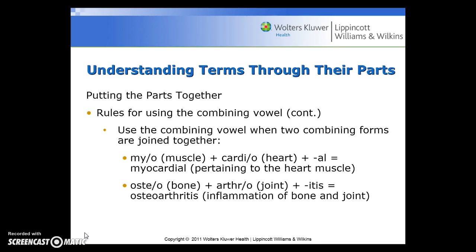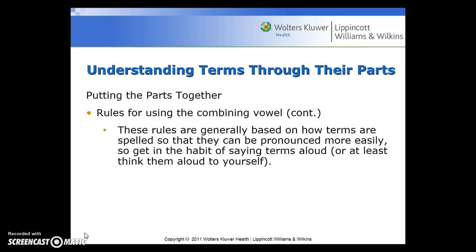When two combining forms are joined together, keep the combining vowel. For example, myo (muscle) plus cardio (heart) plus -al gives us myocardial, pertaining to the heart muscle. Another example: osteo (bone) plus arthro (joint) plus -itis gives us osteoarthritis, the inflammation of the bone and joint. These rules are generally based on how terms are spelled so they can be pronounced more easily, so get into the habit of saying terms aloud.